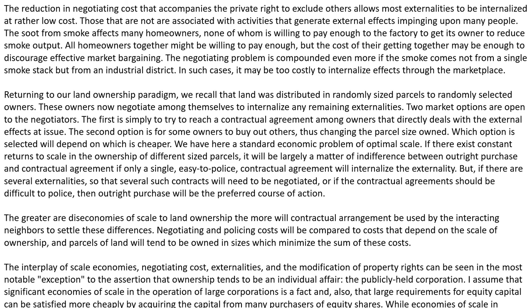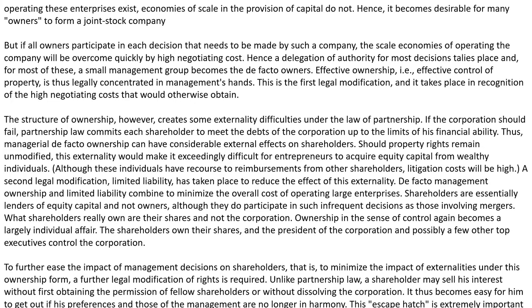While economies of scale in operating those enterprises exist, economies of scale in the provision of capital do not, hence it becomes desirable for many owners to form a joint-stock company. But if all owners participate in each decision that needs to be made by such a company, the scale economies of operating the company will be overcome quickly by high negotiating costs. Hence the delegation of authority for most decisions takes place, and for most of these a small management group becomes de facto owners. Effective ownership — that is, effective control of property — is thus legally concentrated in management's hands. This is the first legal modification, and it takes place in recognition of the high negotiation costs it would otherwise obtain.